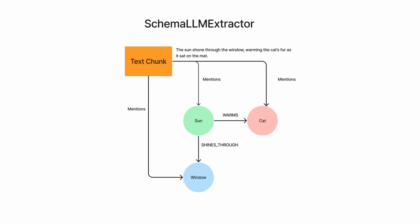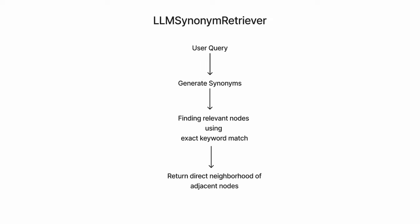You can use a single extractor or a combination of multiple extractors to build a property graph, which we'll look at during the implementation in further videos. After creating a property graph, you use graph retrievers to query it and get an answer. Let's look at the different graph retrievers. The first one is the LLM synonym retriever. Given a user query, it generates synonyms for the query terms, then finds relevant nodes using exact keyword match on those synonyms, checking if they are present in the property graph, and returns the direct neighborhood of adjacent nodes.